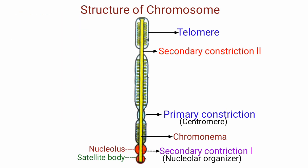The surface of a chromosome bears a number of small swellings called chromomeres.